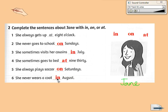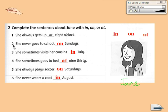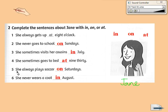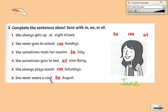Now let's check the answer. Now listen and repeat please. She always gets up at 8 o'clock. 2. She never goes to school on Sundays. 3. She sometimes visits her cousins in July. 4. She sometimes goes to bed at 9:30. 5. She always plays soccer on Saturdays. 6. She never wears a coat in August.